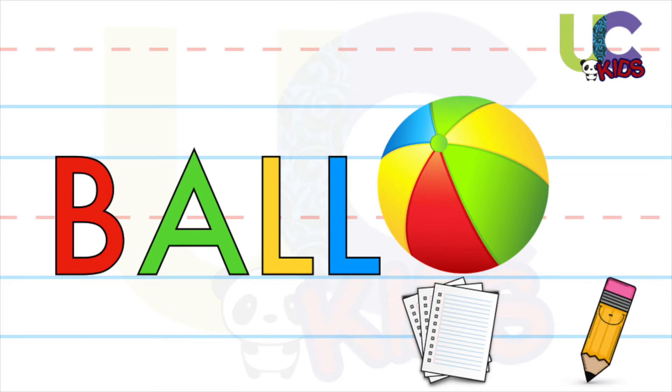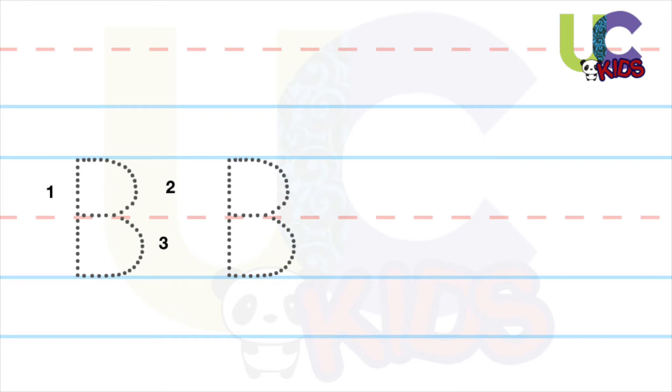To draw a capital B, first, we'll draw a standing line. Then come back to the top and draw a half circle to the middle. In the end, again draw a half circle to the bottom.